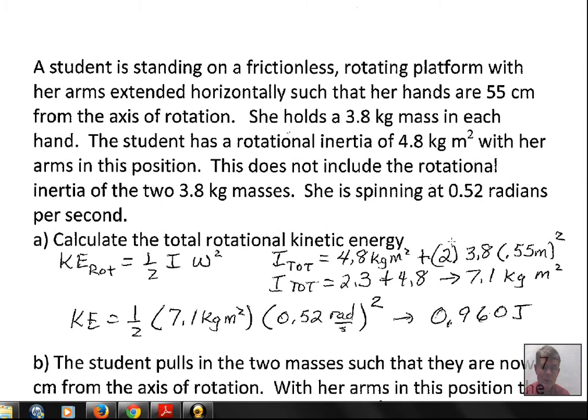First we calculate the total rotational kinetic energy. To do this, we have to consider that there are two parts to the rotational inertia. For one-half Iω², we need to get the total I for the system.